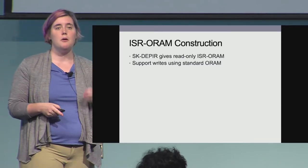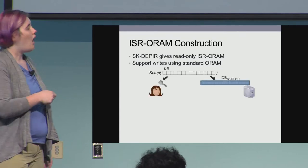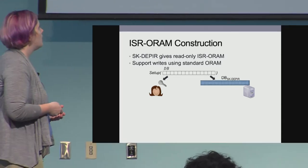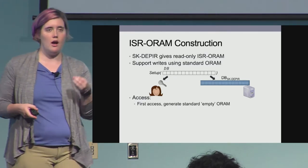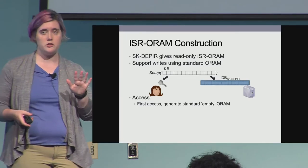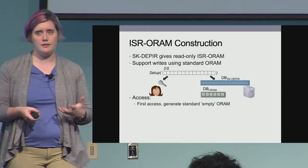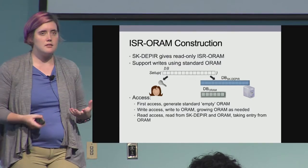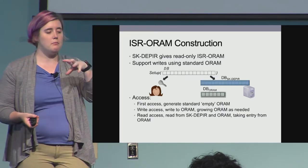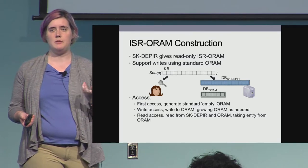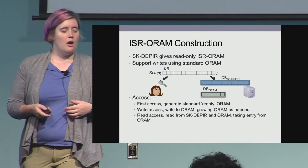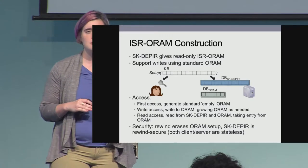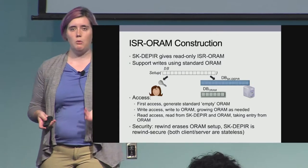We support writes using a standard ORAM, but the key is when we initialize that standard ORAM. Our setup procedure takes in our database, generates the client key, and generates the encoded secret key D-PIR version of our database. Access is also now in charge of initializing the standard ORAM. The first access, regardless of whether it's a read or write, will generate a standard empty ORAM and hand that to the server. Subsequent write accesses will grow that ORAM as needed. Read accesses will read both data structures and take from the ORAM if present, representing any updates to the static encoded database. We get security here because any rewind will essentially erase that standard ORAM, and the secret key D-PIR is stateless, giving us rewind security for free.